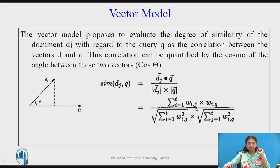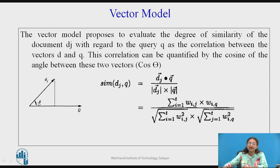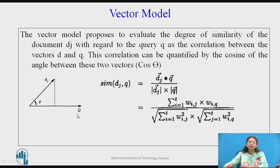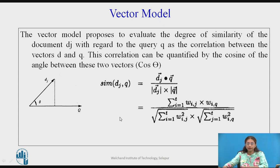If you simplify this, it is the dot product of the vectors, which can be converted into terms of the weight vectors of the document and query. As the angle is less, the document is more similar; as the angle increases, the document is not that similar, because we are going for approximate matching. If q and document Dj vectors are exactly the same, they are exactly similar. This is how we calculate the degree of similarity — it can be considered as a ranking function of the vector model.